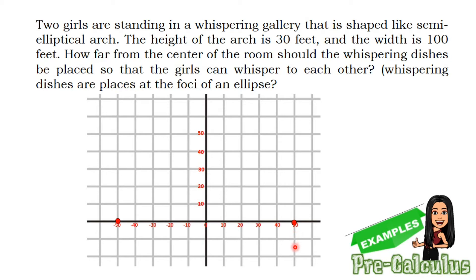These red points here are also called the vertices. Next, we will be having the height of the arch which is 30 feet. When we plot this one, we will be having a point here — the blue point. This is also known as the co-vertex, which lies in the minor axis of our ellipse. Since we only have a semi-elliptical arc, we will be having one co-vertex only for this word problem. Let us now draw our semi-elliptical arc.